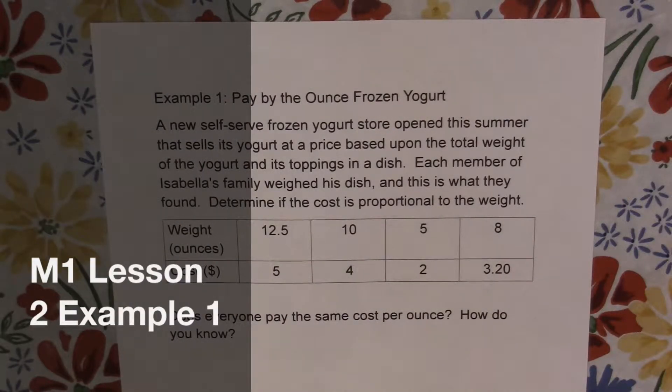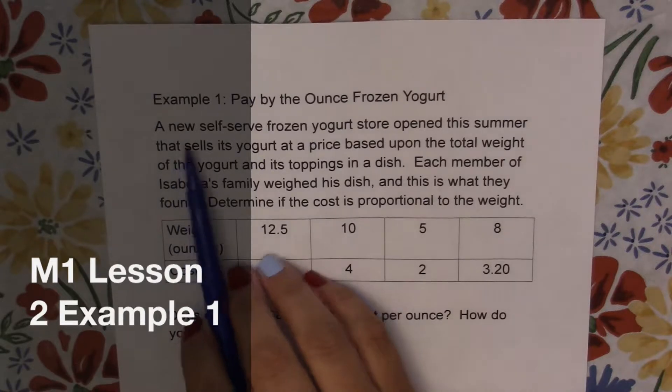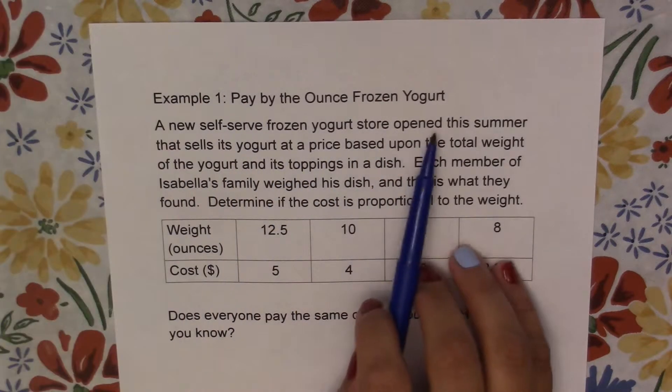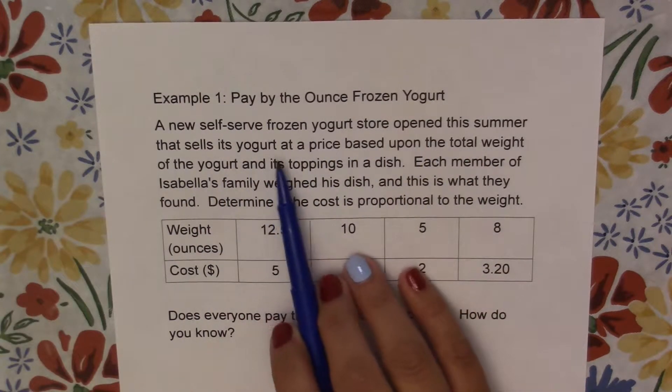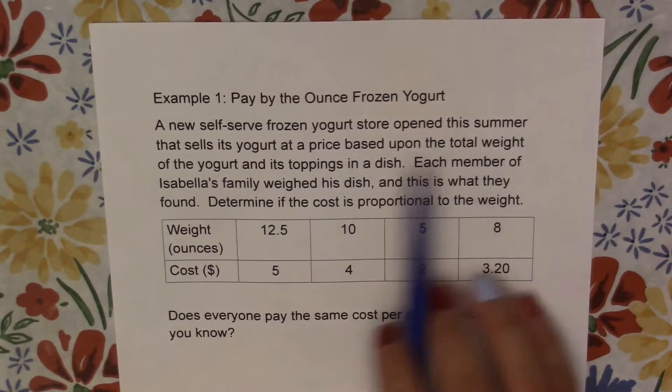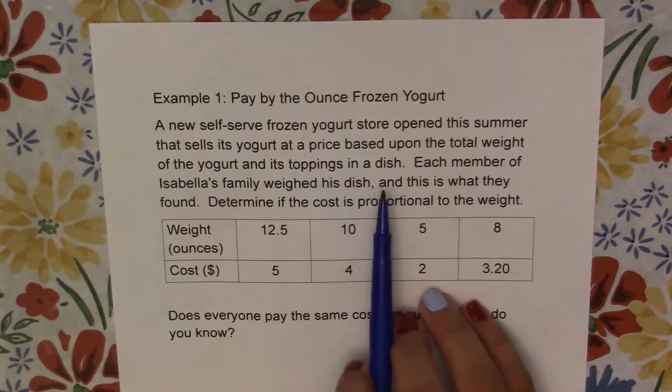Example 1: Pay-by-the-ounce frozen yogurt. A new soft-serve frozen yogurt store opened this summer that sells its yogurt at a price based upon the total weight of the yogurt and its toppings in a dish.